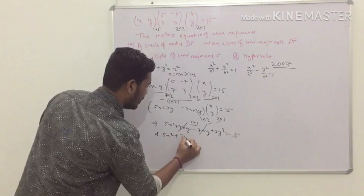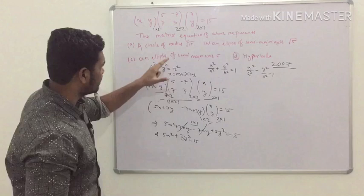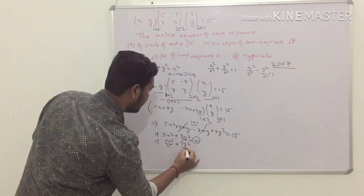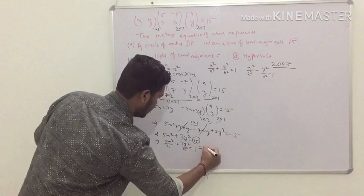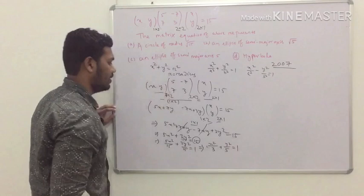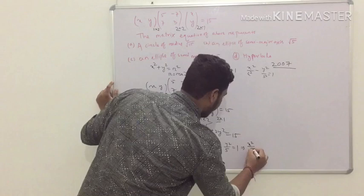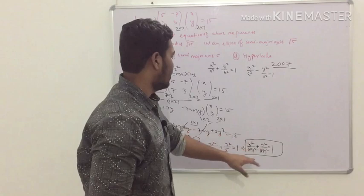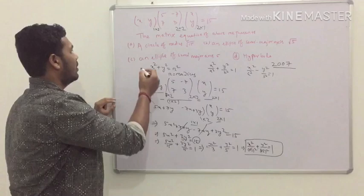We get 5x² + 3y² = 15, which has the form of an ellipse. To reduce it to standard form, divide all terms by 15: 5x²/15 + 3y²/15 = 1, which simplifies to x²/3 + y²/5 = 1. This can be rewritten as x²/(√3)² + y²/(√5)² = 1, which is clearly the standard equation of an ellipse.